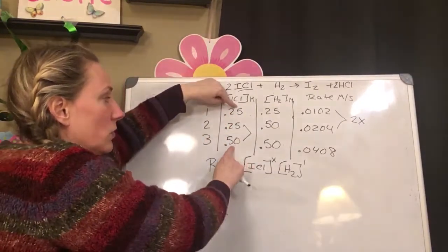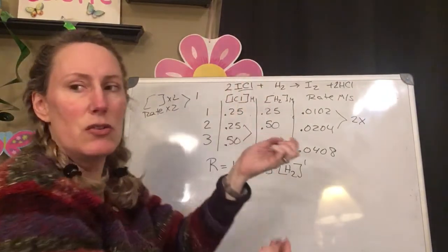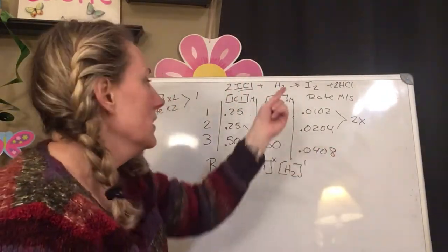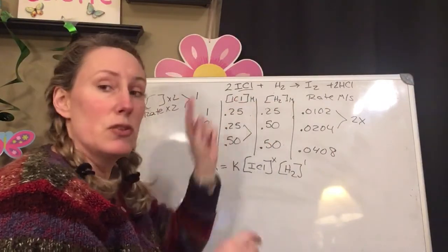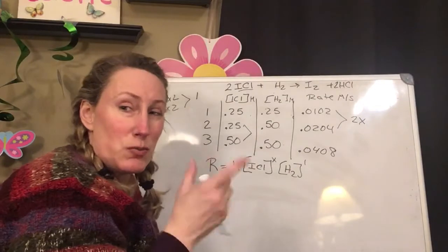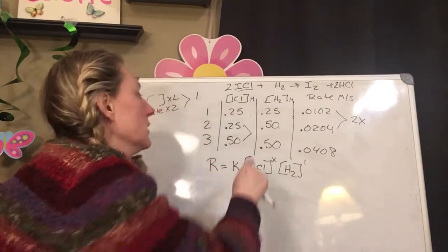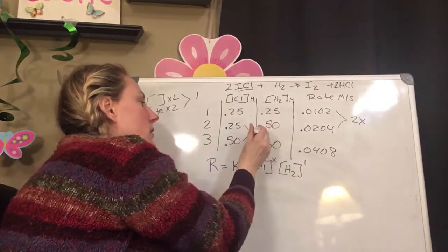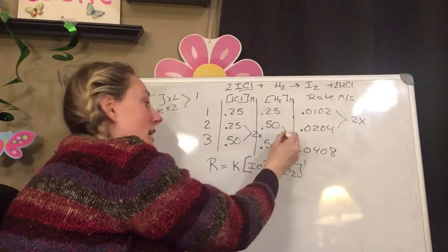This doubles here, but this also doubles, so then you don't know if the rate changes because of this increased concentration or this. So you need to only have one thing change. So the hardest thing here is to pick which trials you're going to look at. So when this one doubles, this does not change.